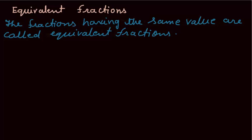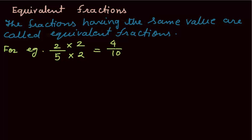To obtain an equivalent fraction, we will multiply the numerator and denominator by the same number. For example, to obtain an equivalent fraction of 2 over 5, we will multiply the numerator and denominator by 2. So, we will get 4 over 10, which is a new fraction. This new fraction is an equivalent fraction of 4 over 10.